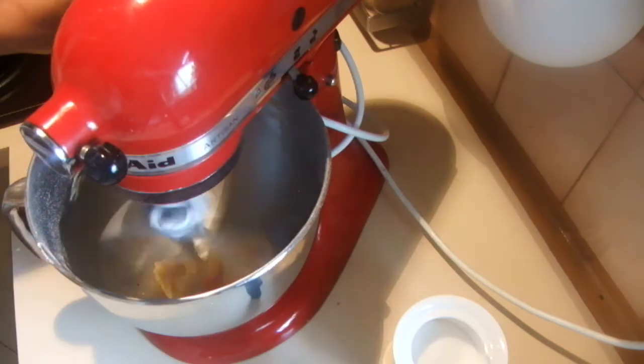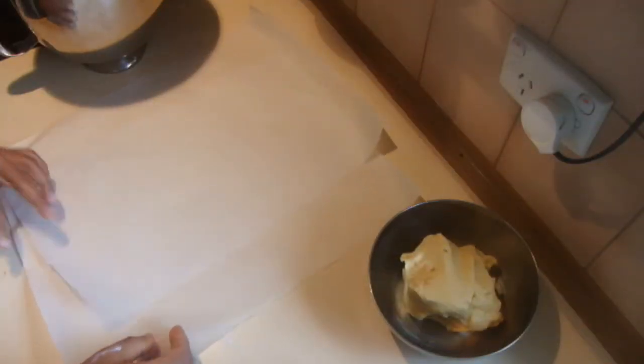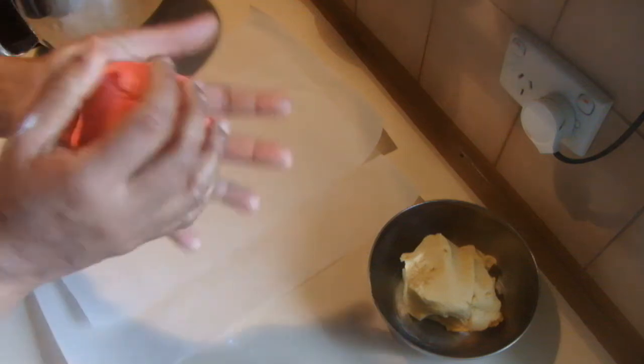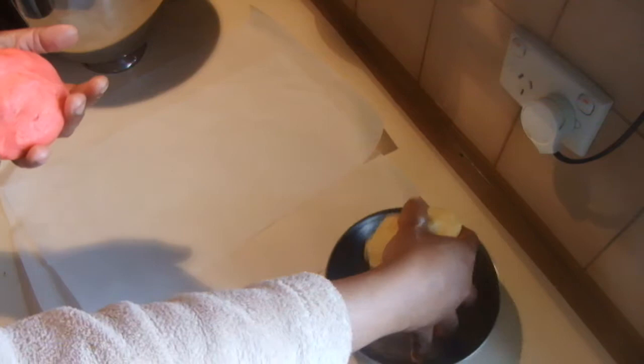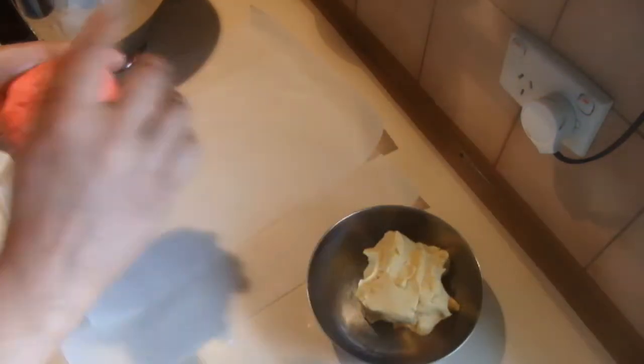Take two sheets of baking paper in equal size. If you like, you can add coloring, chocolate, vanilla, or any other flavor. Roll one dough nicely between your palms.